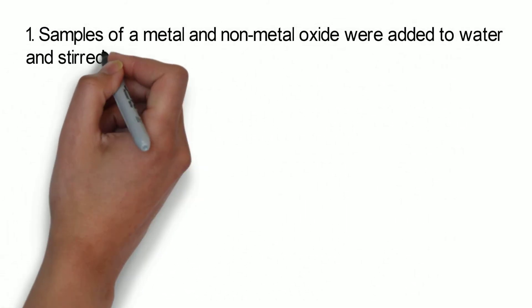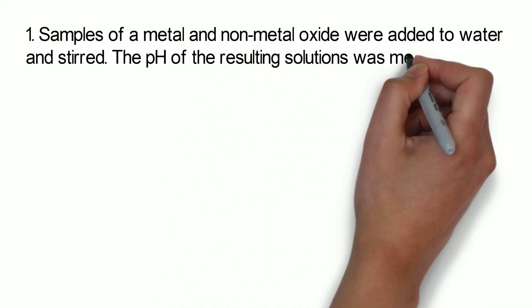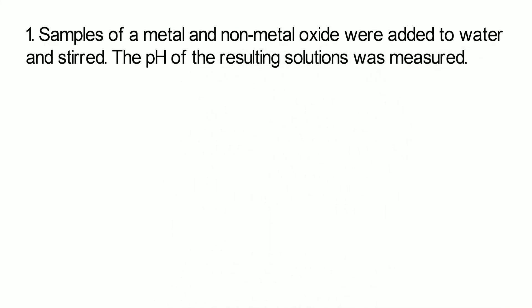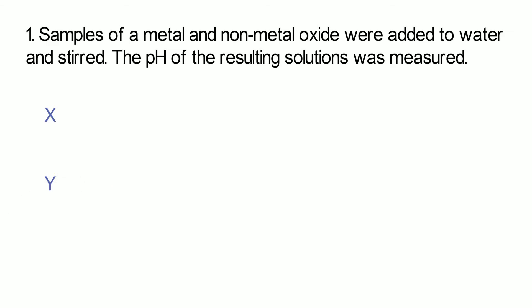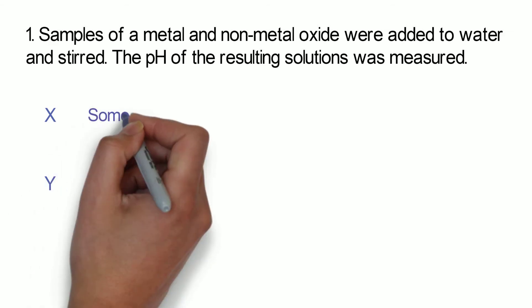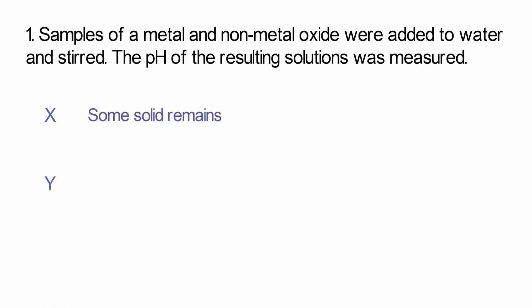So you could get an exam question that looks a bit like this. Samples of a metal and non-metal oxide are added to water and stirred. The pH of the resulting solutions was measured. We have two oxides. We don't know whether they're metal or non-metal oxides. When we dissolve X in the water it doesn't dissolve properly.